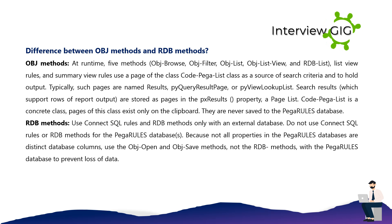Difference between OBJ methods and RDB methods: At runtime, five methods — OBJ Browse, OBJ Filter, OBJ List, OBJ List View, and RDB List — use a page of the class code pega-list-class as a source of search criteria and to hold output. Typically, such pages are named results, pi-query-result-page, or pi-view-lookup-list. Search results are stored as pages in the px-results property, a page list. Code-pega-list is a concrete class; pages of this class exist only on the clipboard and are never saved to the Pega Rules database. For RDB methods: use connect SQL rules and RDB methods only with an external database. Do not use connect SQL rules or RDB methods for the Pega Rules databases, because not all properties in the Pega Rules databases are distinct database columns. Use the OBJ Open and OBJ Save methods, not the RDB methods, with the Pega Rules database to prevent loss of data.